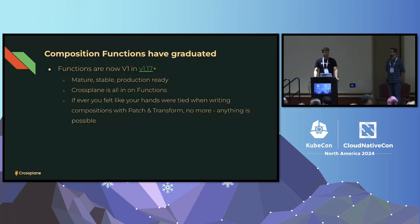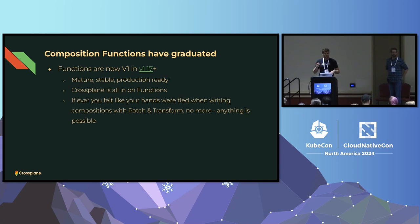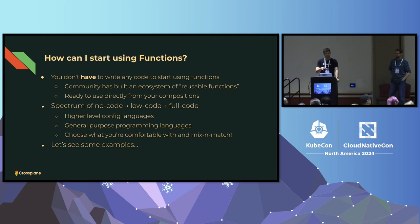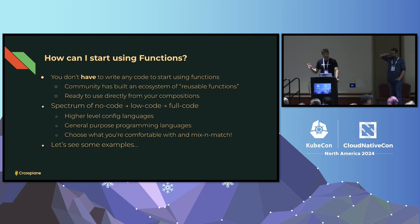Composition functions have graduated to V1 in Crossplane 1.17. They're mature, stable, production-ready, and being used in production all over the place. Crossplane is all-in on functions. Before this, we had patch and transform — for those who've used it and felt like your hands were tied behind your back, that's no longer the case. The community has written an ecosystem of reusable functions you can just throw into your compositions. You also have the ability to go from no-code to low-code to full-code. If you want a high-level config language, a full general-purpose language, or both — you can mix and match.